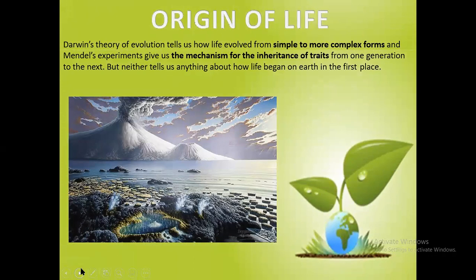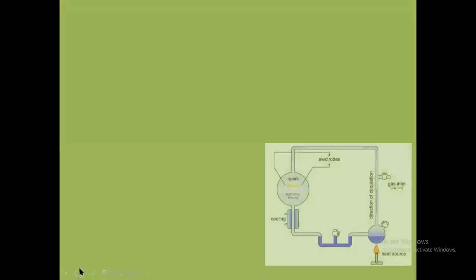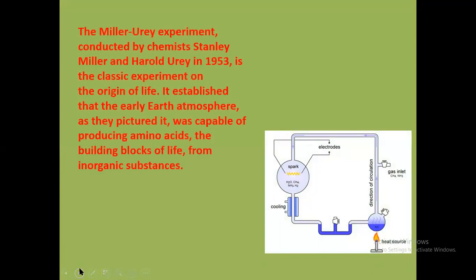In Darwin's theory of evolution, we saw how life evolved from simple to more complex forms. In Mendel's experiment, Mendel described the mechanism of inheritance of traits from one generation to the next. But they didn't tell us anything about how life began on earth in the first place. This was described by scientist Stanley Miller. The Miller-Urey experiment, conducted by chemists Stanley Miller and Harold Urey in 1953, is the classical experiment on the origin of life. It established that the early earth atmosphere was capable of producing amino acids — the building blocks of life — from inorganic substances.